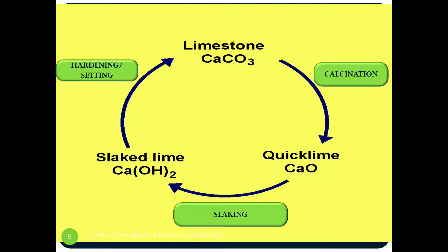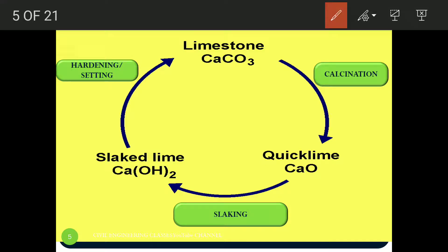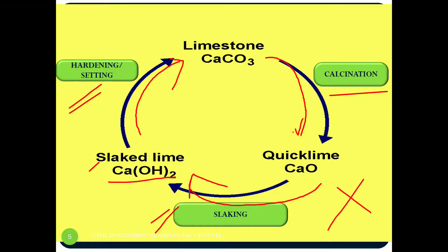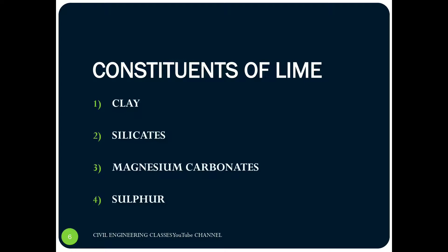This is the cyclic process of the formation of different lime forms. First, limestone — calcium carbonate — is converted to quicklime by calcination. Then the quicklime, on slaking by adding water, converts to calcium hydroxide, that is slaked lime. In the presence of carbon dioxide, this again hardens to form limestone — calcium carbonate. Don't get confused between the slaking process and the hardening process; these two are exactly opposite processes.